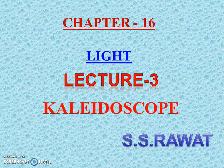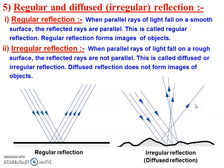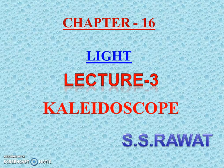There are two types of reflection. One is regular reflection and the second is irregular or diffused reflection. In regular reflection, a parallel beam of light incident on the reflecting surface bounces back in the same medium and remains a parallel beam of light. In diffused reflection, there is a rough reflecting surface; when a parallel beam of light falls on it, it gets diverged and will not remain in parallel form.